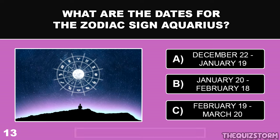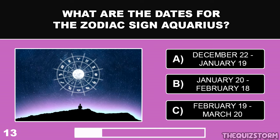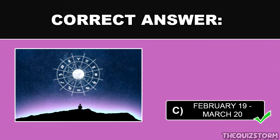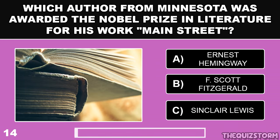What are the dates for the zodiac sign Aquarius? And the correct answer is January 20th to February 18th.